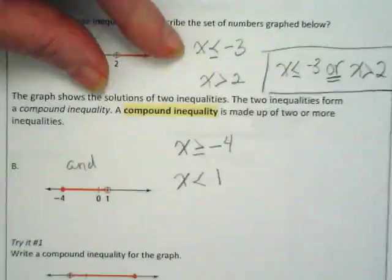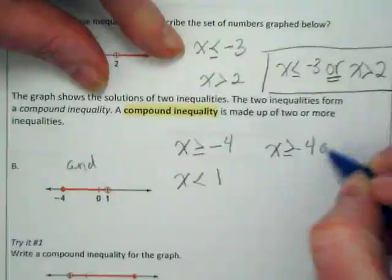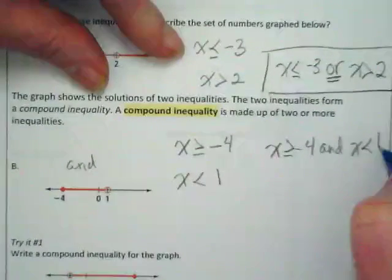The second one would be written with the and. X is greater than or equal to negative 4 and x is less than 1.